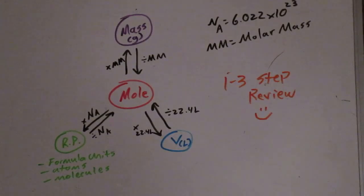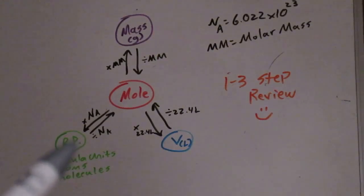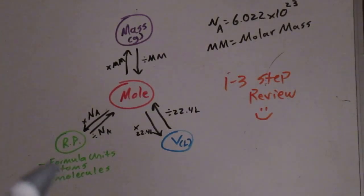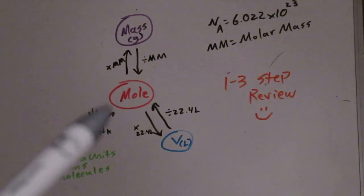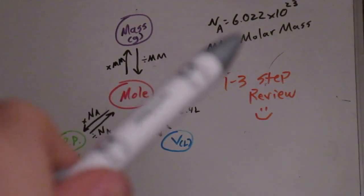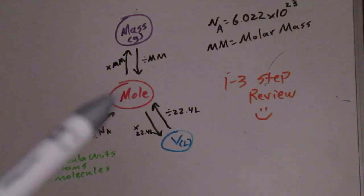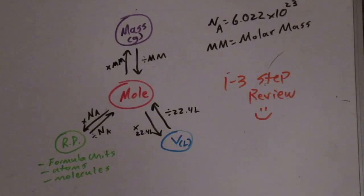With Moe Island, you can notice that with representative particles, we have some magic buzzwords that go along with it. RP is representative particles. If you see formula units, atoms, or molecules, you're going to be starting with the particle island. Going toward Moe Island, you are going to be dividing by Avogadro's number, which is N sub A — 6.022 times 10 to the 23rd. Going towards particle island, you're going to be multiplying by that number.